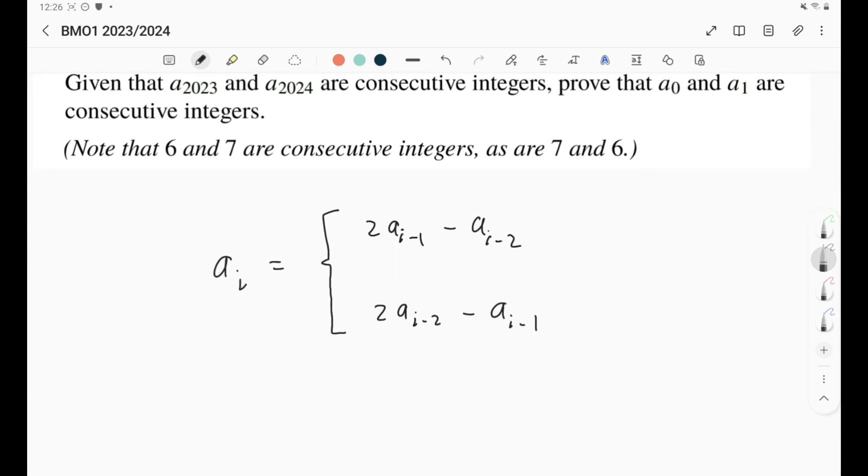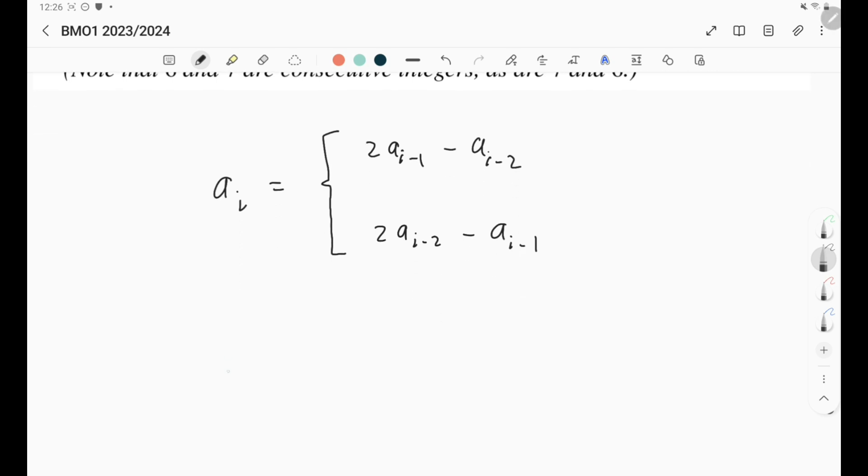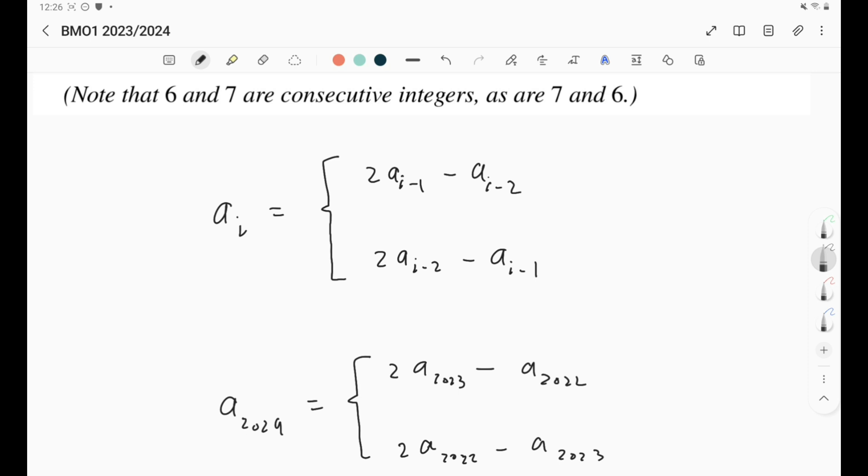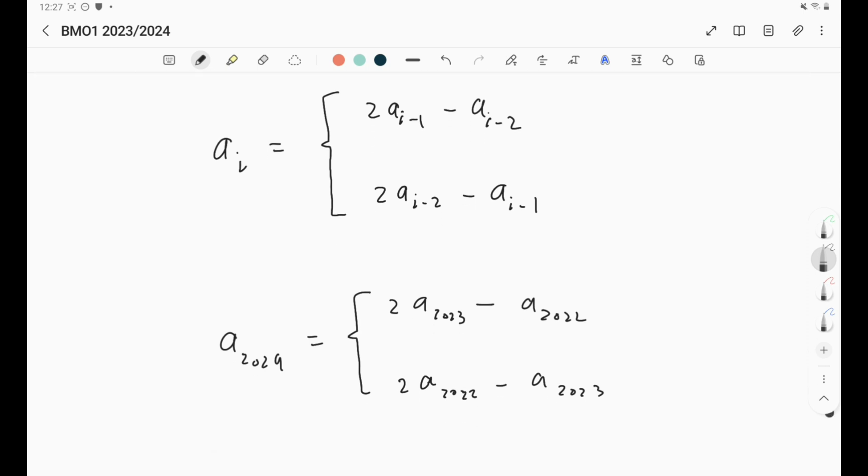Well, let's simply write what is a_2024. Right now we know that a_2024 is simply either 2a_2023 minus a_2022, or it is 2a_2022 minus a_2023. They are telling us that a_2024 is equal to, actually we don't know, it's either a_2023 plus one or minus one, but what we know is we can see that a_2024 minus a_2023 is either one or negative one.